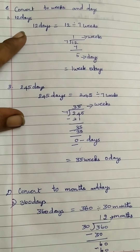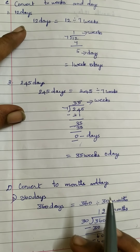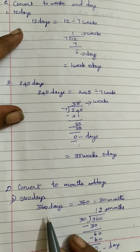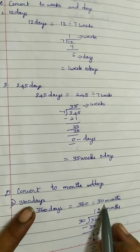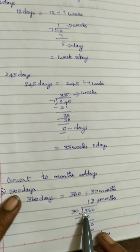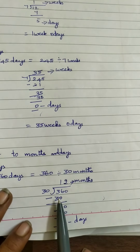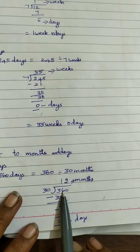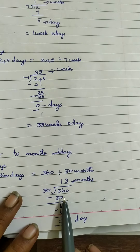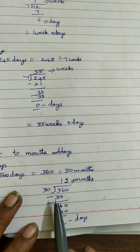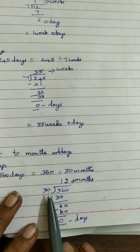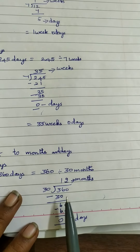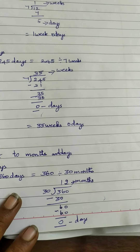Problem D: convert days into months and days. You have 360 days and you are going to convert it into months by dividing by 30. So 360 divided by 30: 36 divided by 30, subtracting gives 6, bring the next digit down to get 60. Thirty 2s are 60; 60 minus 60 is 0. Your answer is 12 months 0 days.